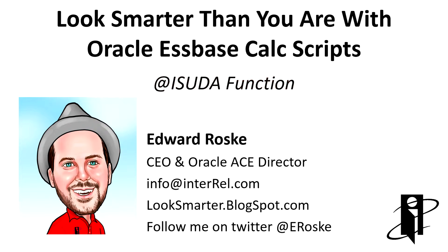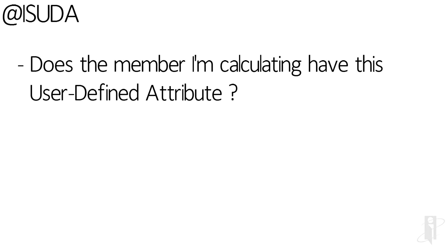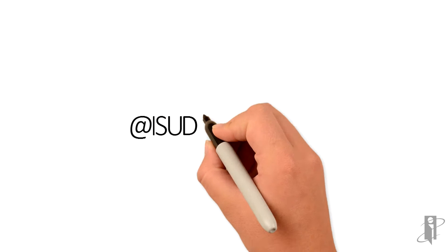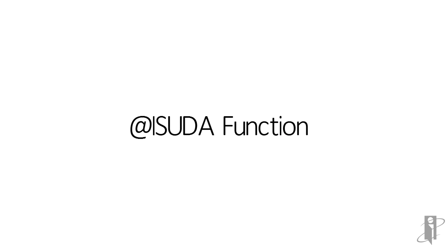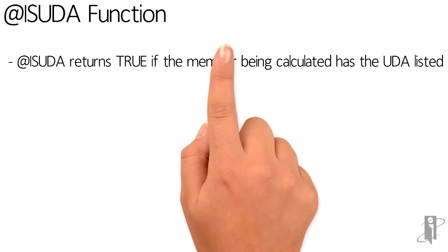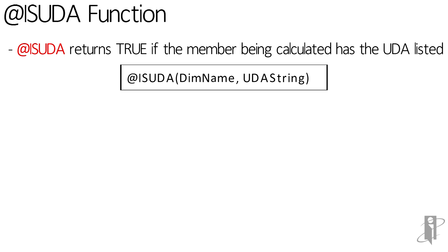Welcome to the @ISUDA function. @ISUDA is used to determine if the member that's currently being calculated has a specific UDA, or user-defined attribute. It's important to remember that when you're calculating an Essbase cube, you're calculating several dimensions at the same time because you're trying to return a value of a single cell, which is the intersection of all of the dimensions. So to check a UDA, you have to tell it which dimension you care about.